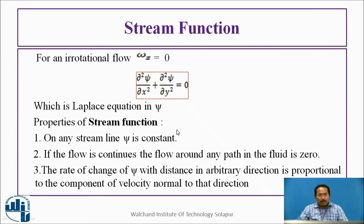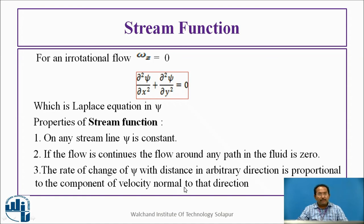Now we will see the properties of the stream function. First, on any stream line, ψ is constant. Second, if the flow is continuous, the flow around any closed path is zero. Third, the rate of change of ψ with respect to an arbitrary direction is proportional to the component of velocity normal to that direction.